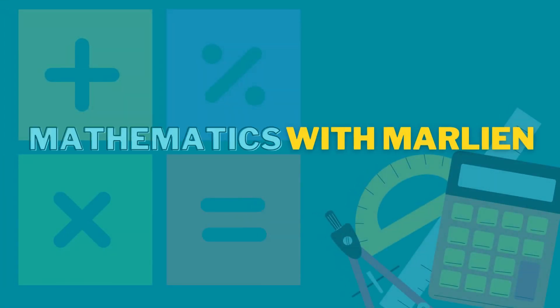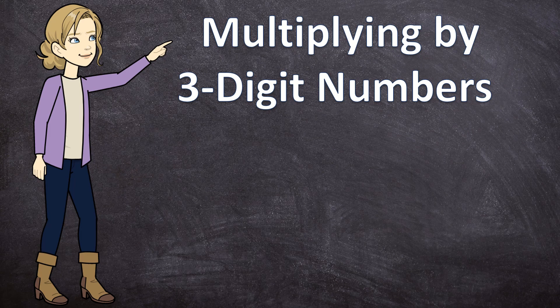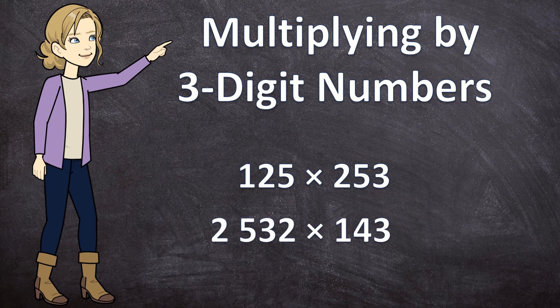Hello everyone and welcome to Mathematics with Marlene. In today's video we'll be multiplying by three-digit numbers. The first example will be a three-digit number times a three-digit number, and the second example will be a four-digit number times a three-digit number. I already made videos for multiplying by two-digit numbers — links are in the cards above and in the description box below. In this video we'll only be multiplying by three-digit numbers, so let's look at the first example.